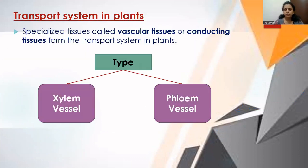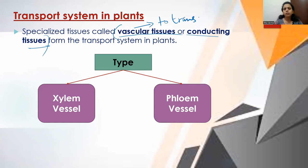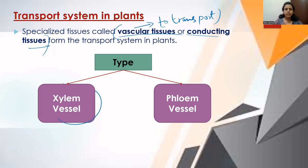The transport system in plants is made up of specialized tissues known as vascular tissues or conducting tissues. These vascular tissues are of two types: xylem vessels and phloem vessels. We will now learn about the adaptation and function of each.